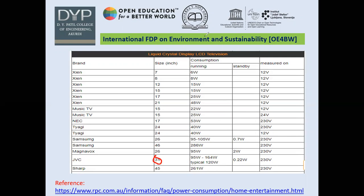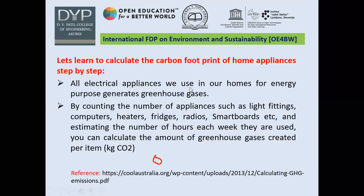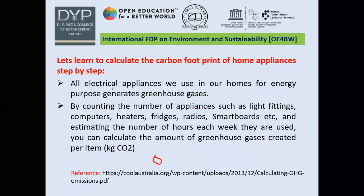In the next slide, we will calculate the carbon footprint of a home appliances system as a task. All electrical appliances in our home generate greenhouse gases — including lighting, computers, heaters, fridges, radios, smart boards, and everything being used at home. We will calculate one example and verify how it is covered.